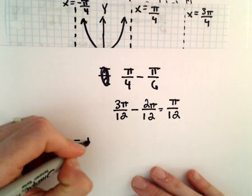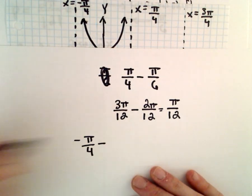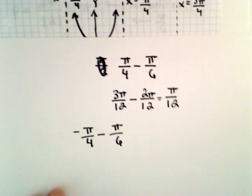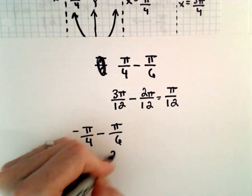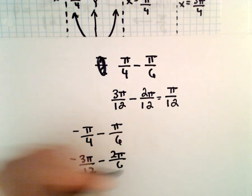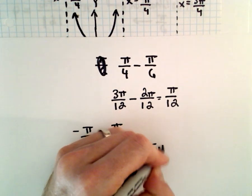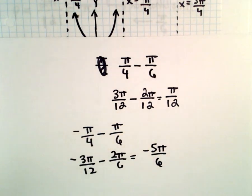Likewise, you had negative pi over 4, and if you subtract away pi over 6, that's going to be negative 3 pi over 12 minus 2 pi over 12, and that'll give you negative 5 pi over 12.